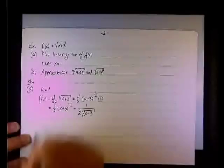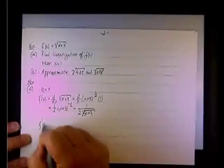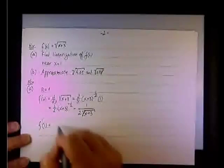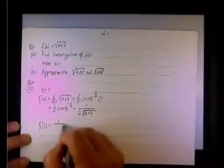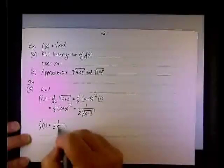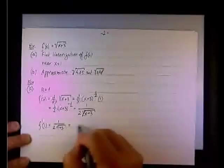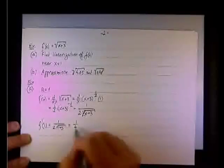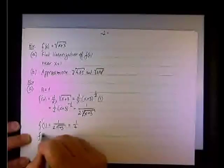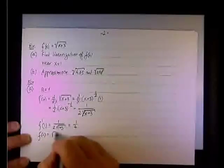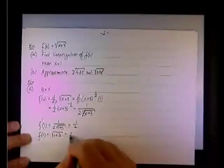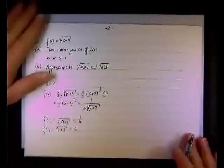So now we need to evaluate this one at 1. So f prime at 1 would be 1 over 2 times 1 plus 3, and this will be simply 1/4. Also, we need f of 1. So f of 1 would be square root of 1 plus 3. Well, that would be 2. And now I'm ready.